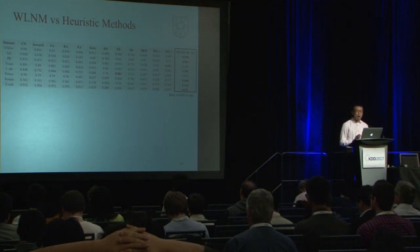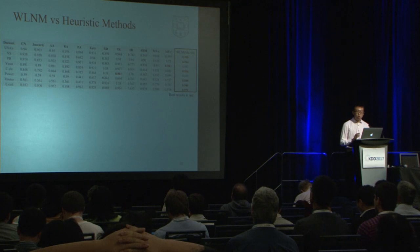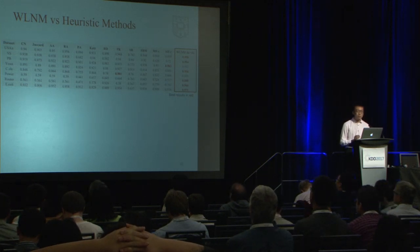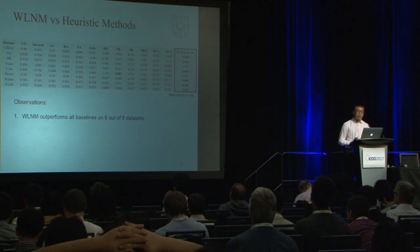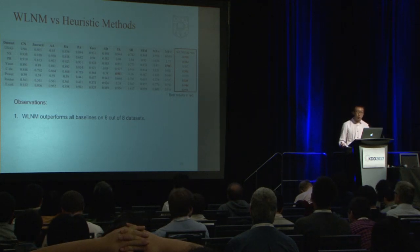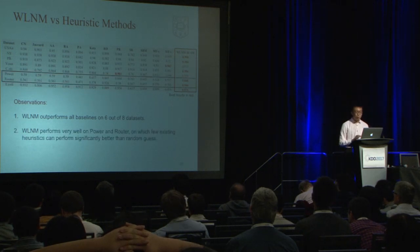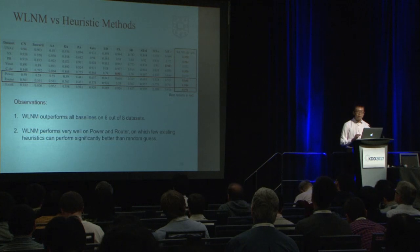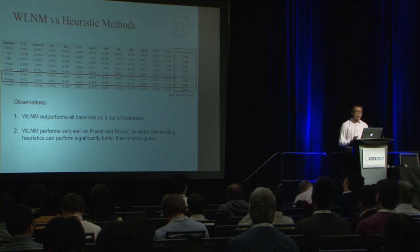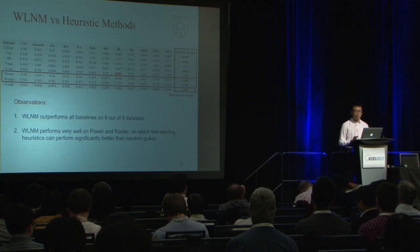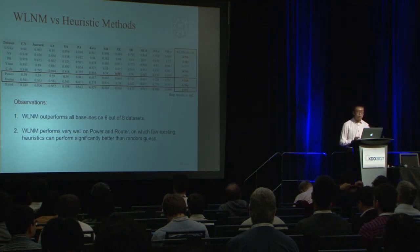For performance experiments, we compare the Weissfeller-Lehmann Neural Machine against 13 baseline methods, including nine popular heuristic methods and three latent feature models such as common neighbors, Jaccard index, Adamic-Adar, Katz index, resistance distance, PageRank, SimRank, statistical block model, and matrix factorization. Our method outperforms all baselines on six out of eight benchmark datasets. Moreover, for the power grid and router networks where few existing heuristics perform significantly better than random guess, our method performs very well, because WLNM does not assume specific link formation mechanisms but learns them from the network itself.